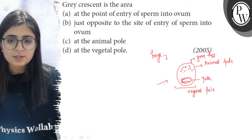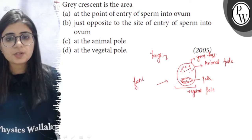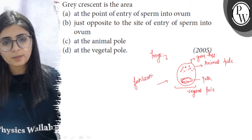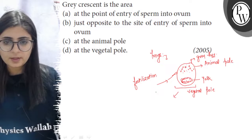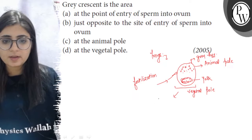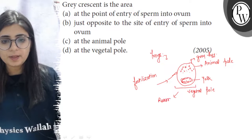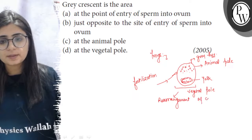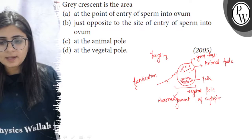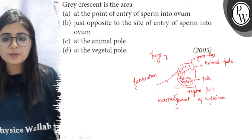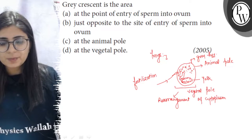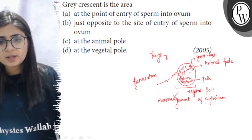When fertilization occurs — that is, the fusion of egg with the sperm — the cytoplasm gets rearranged. During the time of fertilization, there is rearrangement of cytoplasm. The cytoplasm moves towards the point of entry of the sperm, and this movement leaves behind the melanin granules.